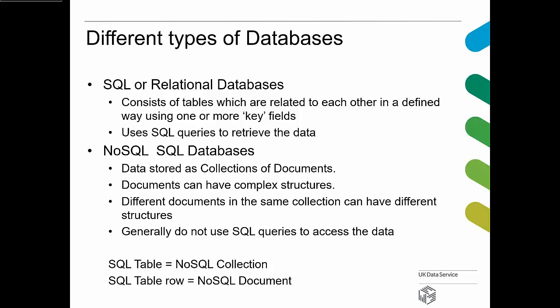Just to put it into context, there are other types of databases — normally referred to as NoSQL databases. Here you're still storing data, but the data is stored in terms of collections of documents. An SQL table equates to a NoSQL collection, and an SQL table row is a NoSQL document. What makes a document different from a table row is the complexity of the data structure. In a table it's simple rows and columns, whereas in a NoSQL document the structure can be a lot more complex.